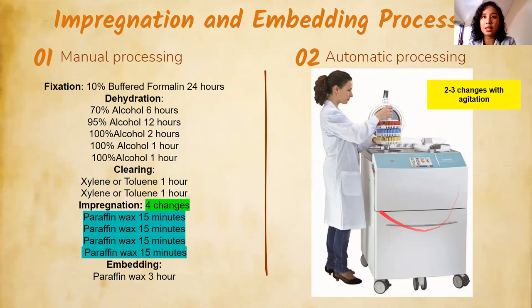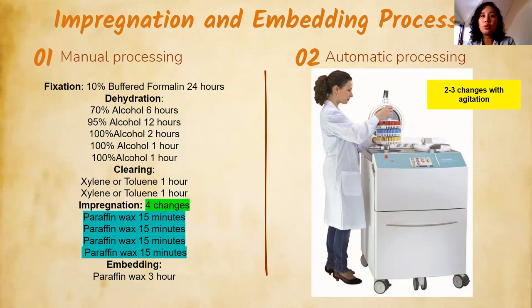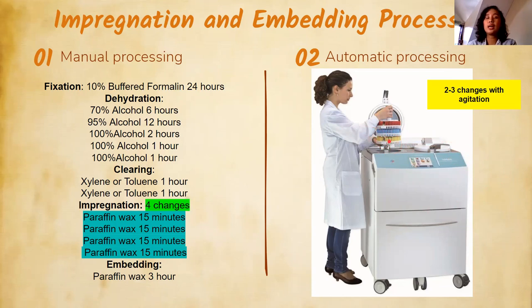For automatic processors like the Logos machine, it is a tissue fluid transfer system where the cassettes don't move. You can process many cassettes at one time. For example, when a large organ like a uterus arrives — with fallopian tubes, uterus, endometrium — the pathologist may want many tissue sections and uses multiple cassettes. With the automatic processor, you can process many cassettes simultaneously.